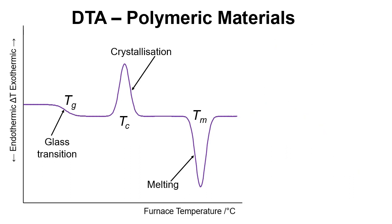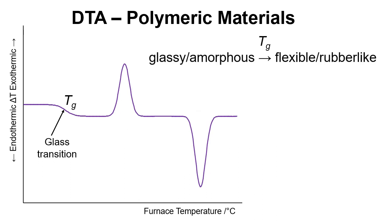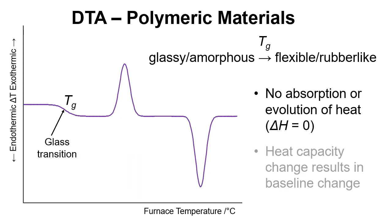If we just focus on this first part of the thermogram and think about the glass transition to start with. This is where we go from a glassy amorphous material to a flexible and rubber-like material. There's no absorption or evolution of heat and so ΔH equals zero. But there is a change in heat capacity and that results in this baseline change.